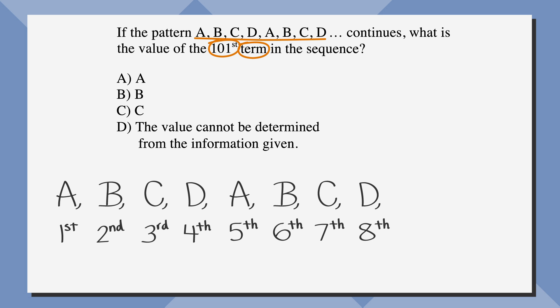Writing the term number beneath the letters of the pattern we're given shows us that the pattern repeats A, B, C, D, then back to A, and so forth. Our ninth term would then be A, and B would be our tenth term. We know so far that the pattern has four terms and that we need to find the 101st term.